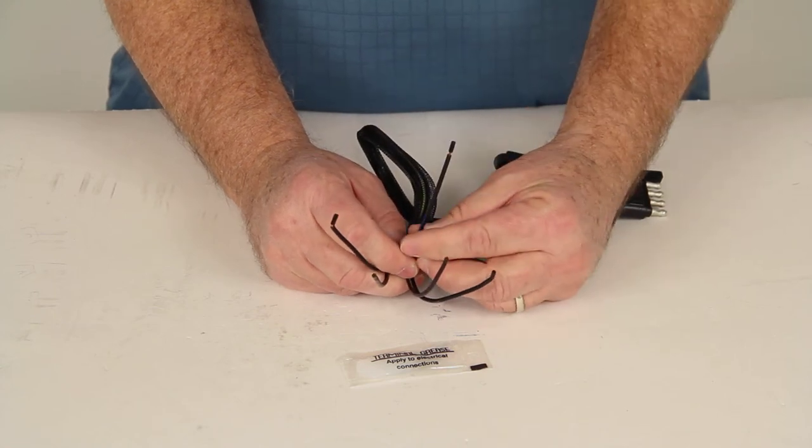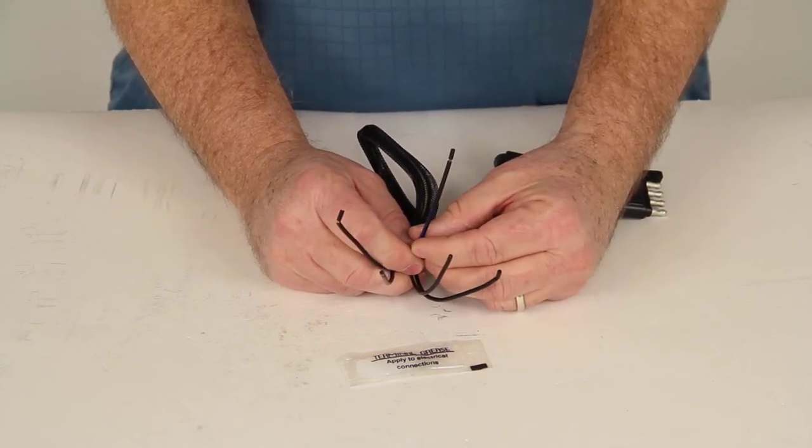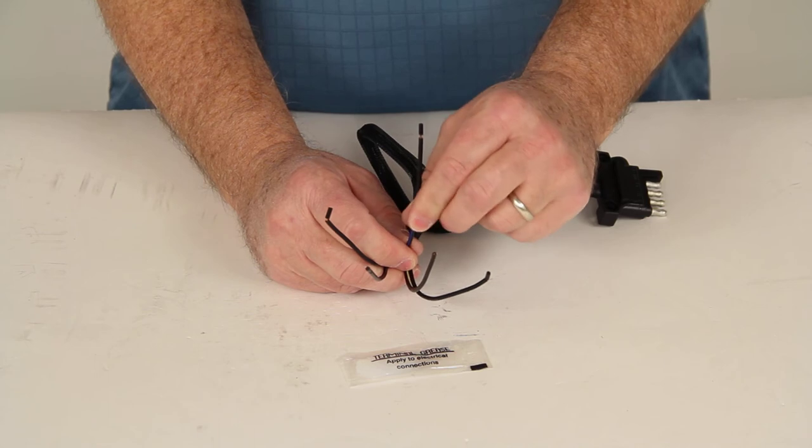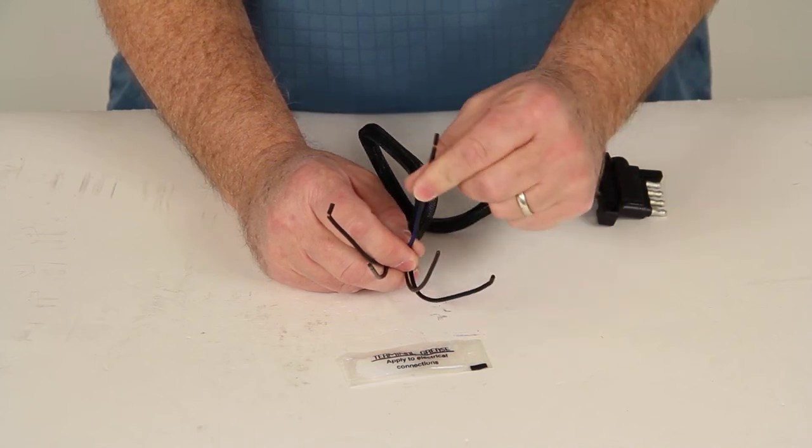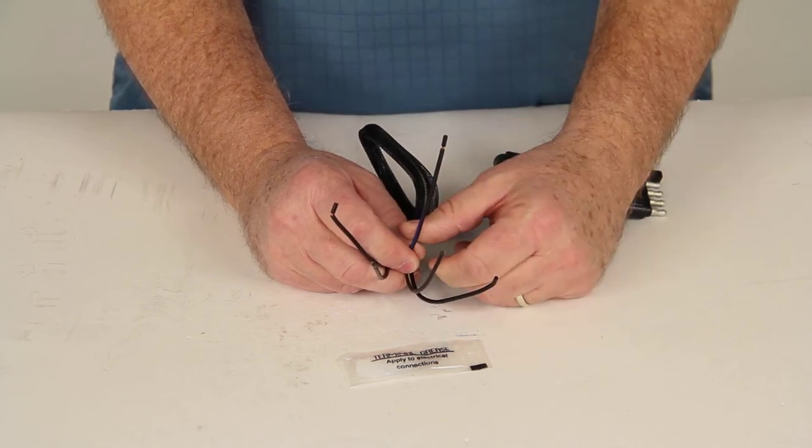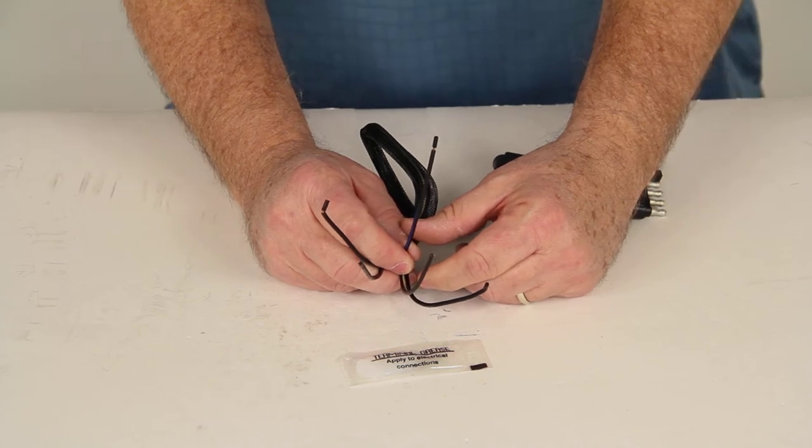Also, this will work with small utility trailers that have electric brakes, but you'll have to remember for this type of application, this fifth wire will need to be wired to correspond with your in-cab electric brake controller.